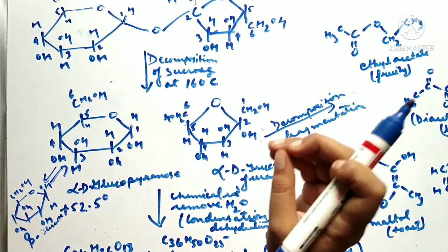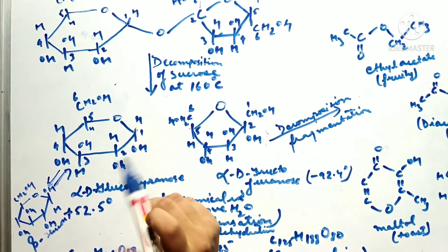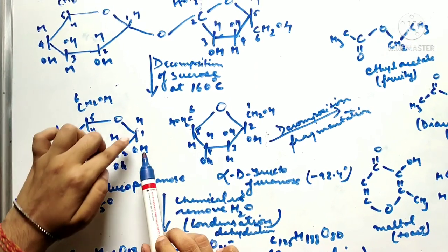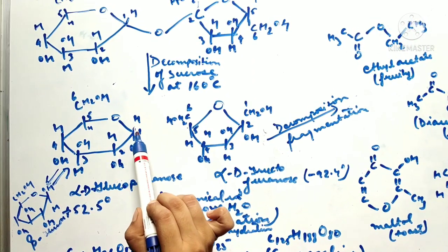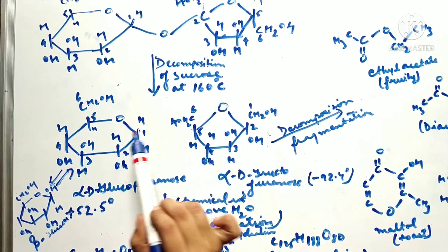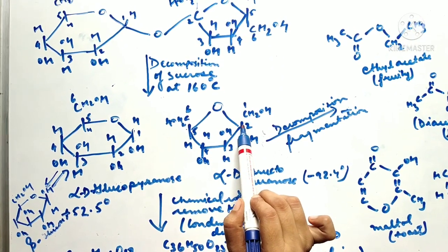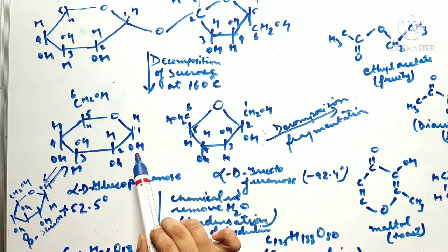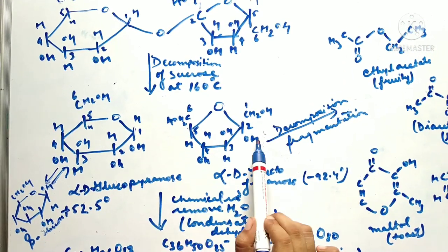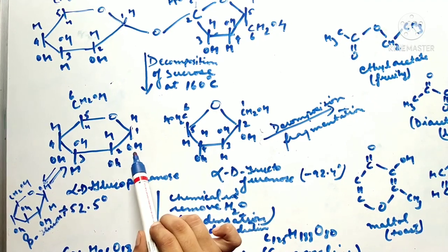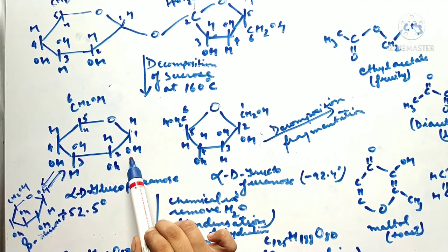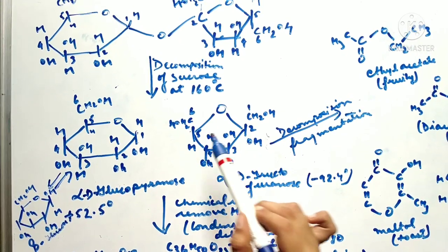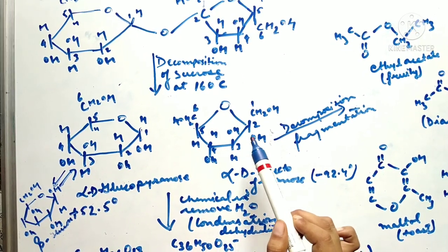What is the anomeric ring? The anomeric carbon refers to the first carbon of glucose and the second carbon of fructose. They show a change in the position of the OH group — when OH is below the plane it is alpha, when it is above the plane it is beta. This carbon is called the anomeric carbon.